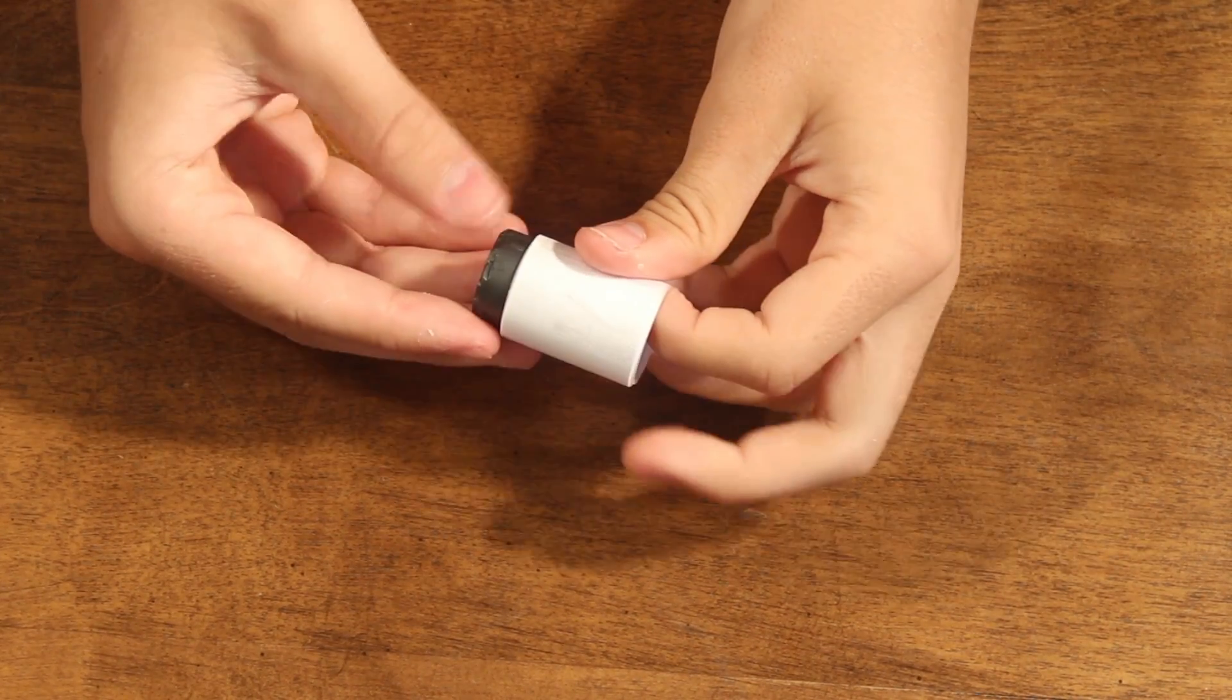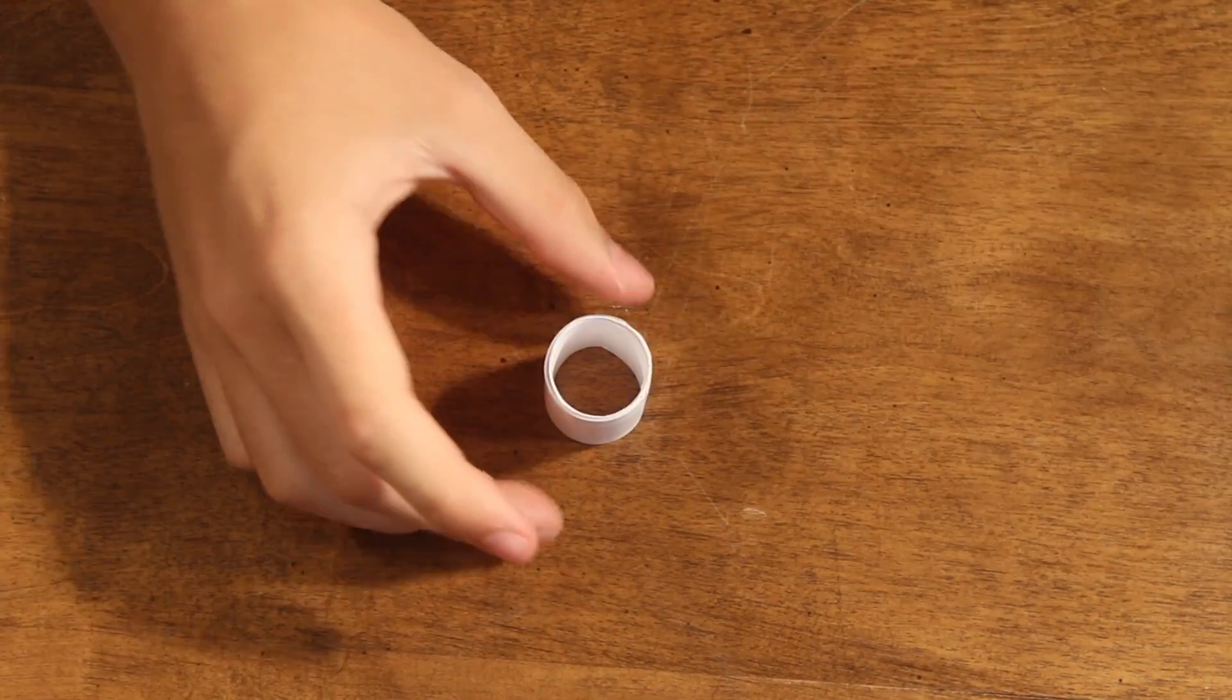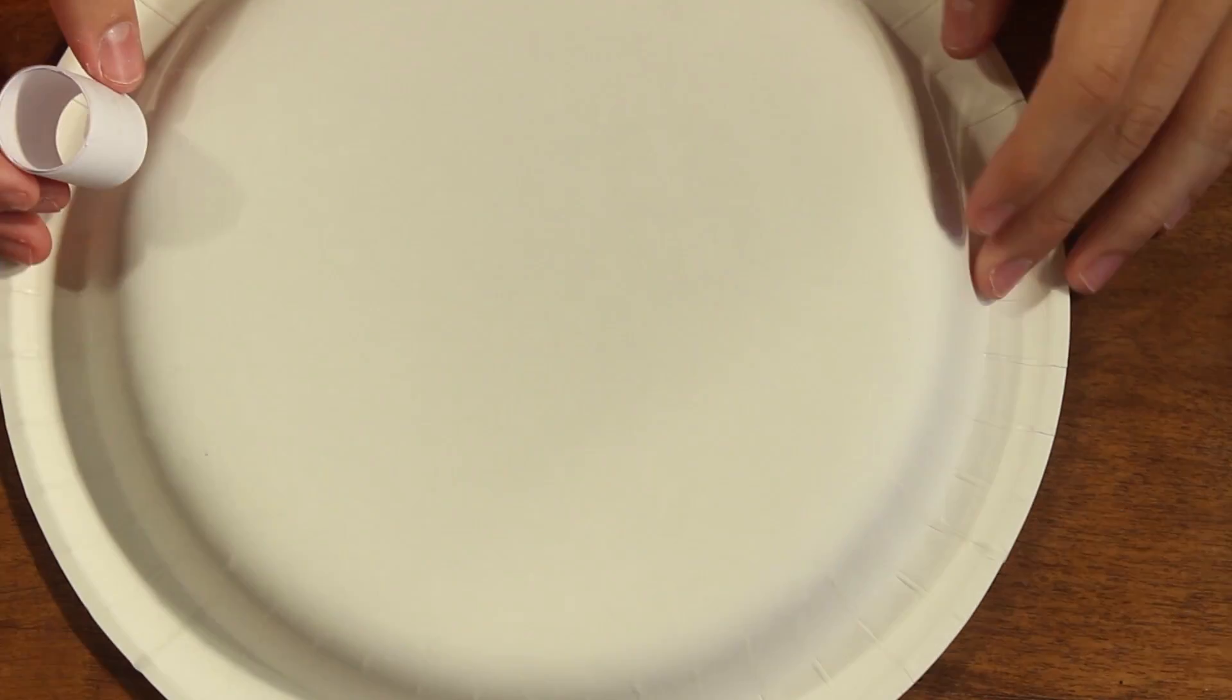Step two is going to be to take out the magnet and take your paper cylinder and glue it on the bottom center of the paper plate.